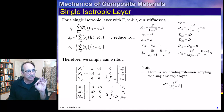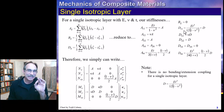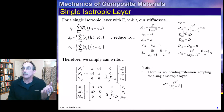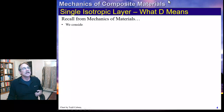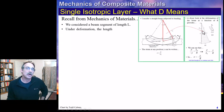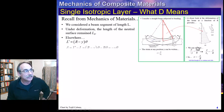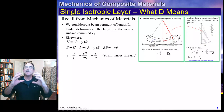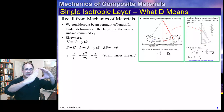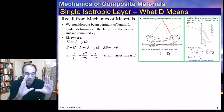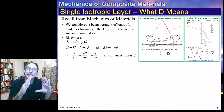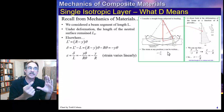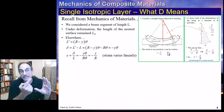The D11 term has ET cubed over 12 times (1 minus Poisson's ratio squared), which is a really important term for expressing bending and relating bending loads to stresses. Looking further at the D matrix, we can drop back to what we learned in Structures 1 or Mechanics of Materials, where we bent a beam and investigated the behavior — the middle surface did not extend.